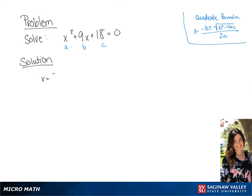This is going to give us x equals negative 9 plus or minus the square root of 81 minus 72 all over 2.